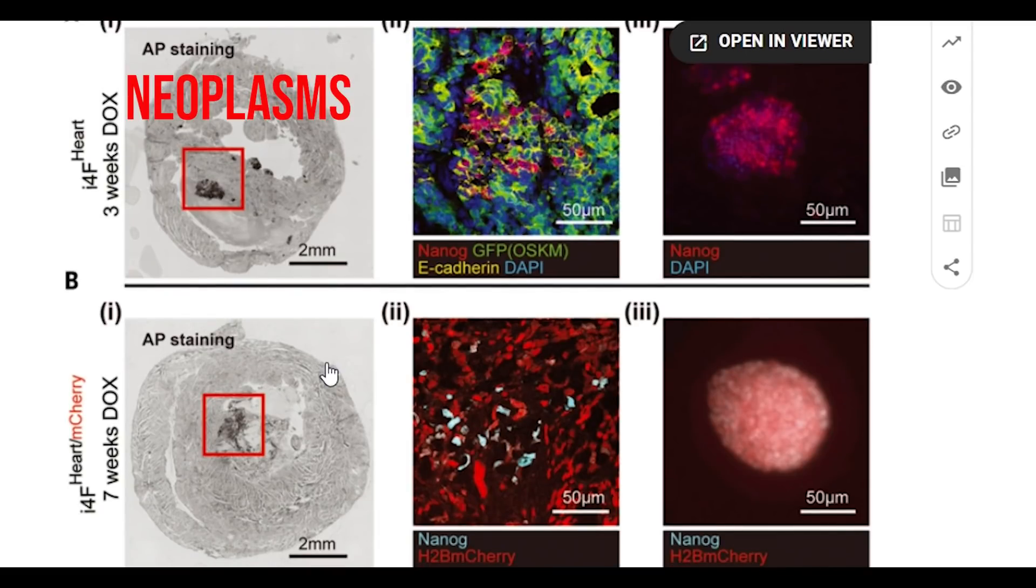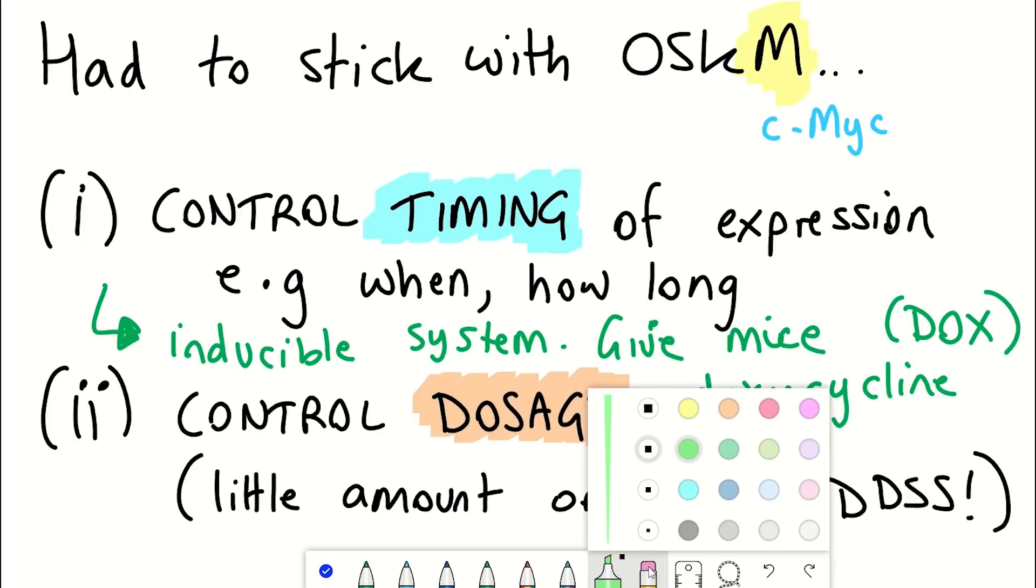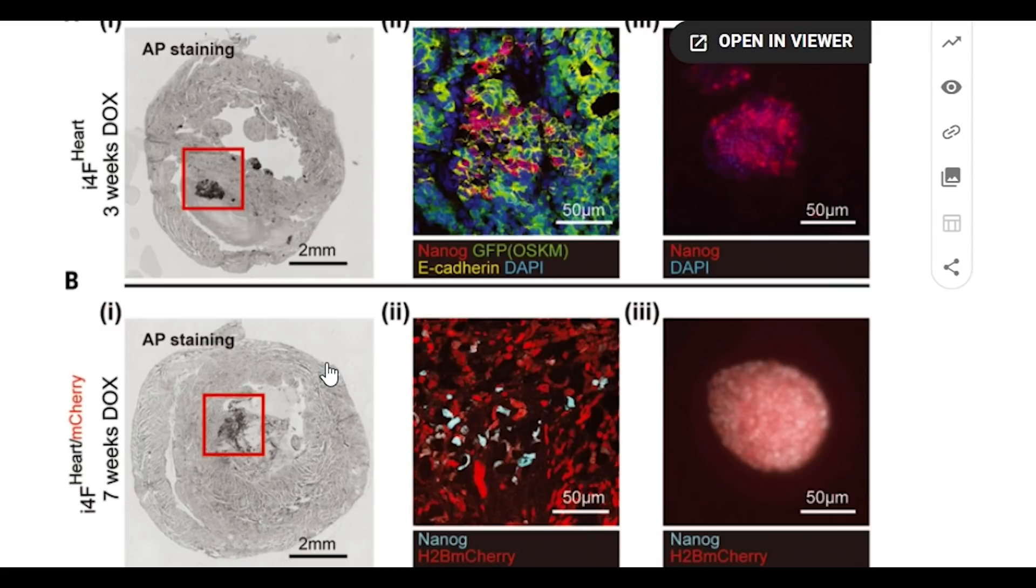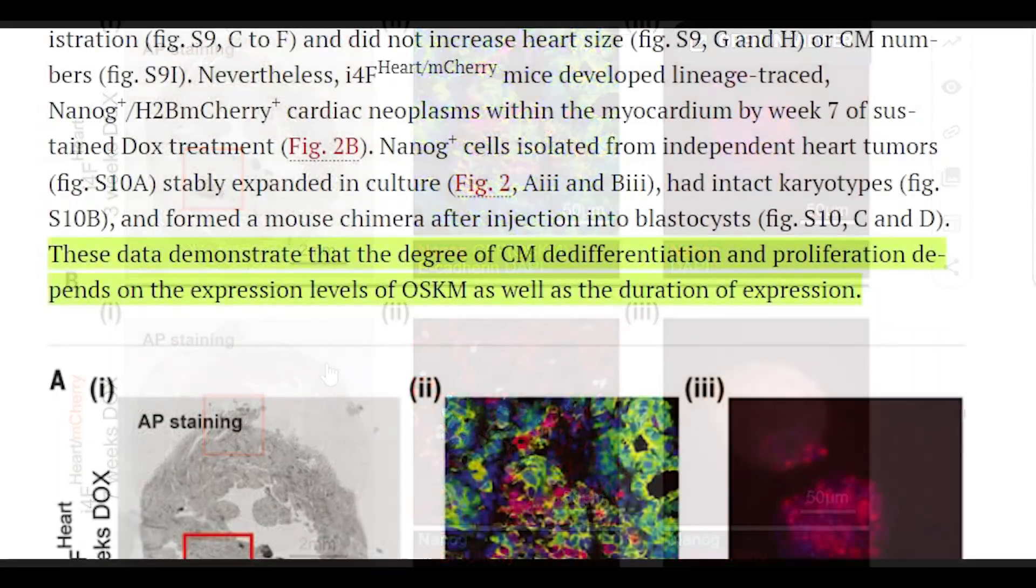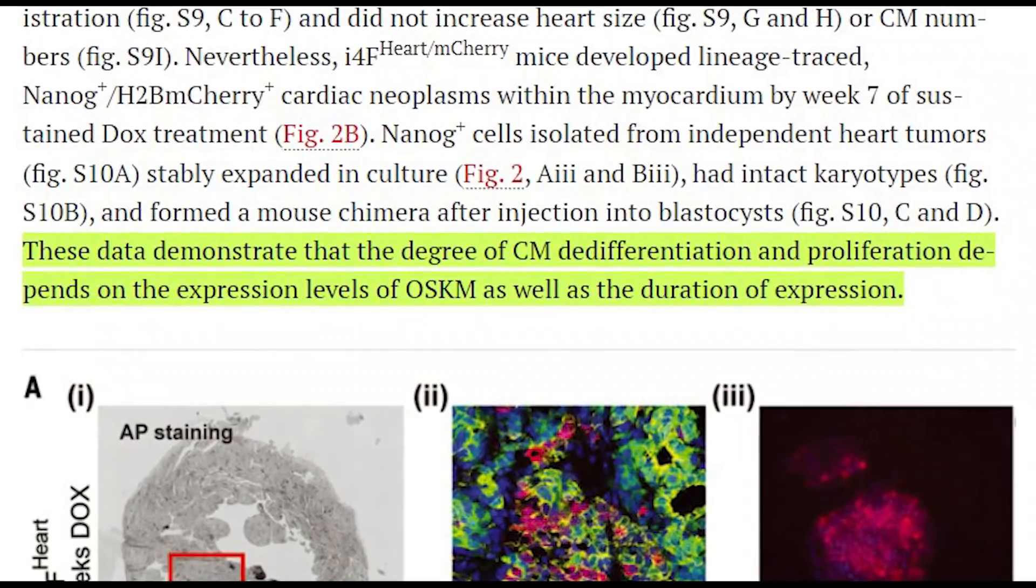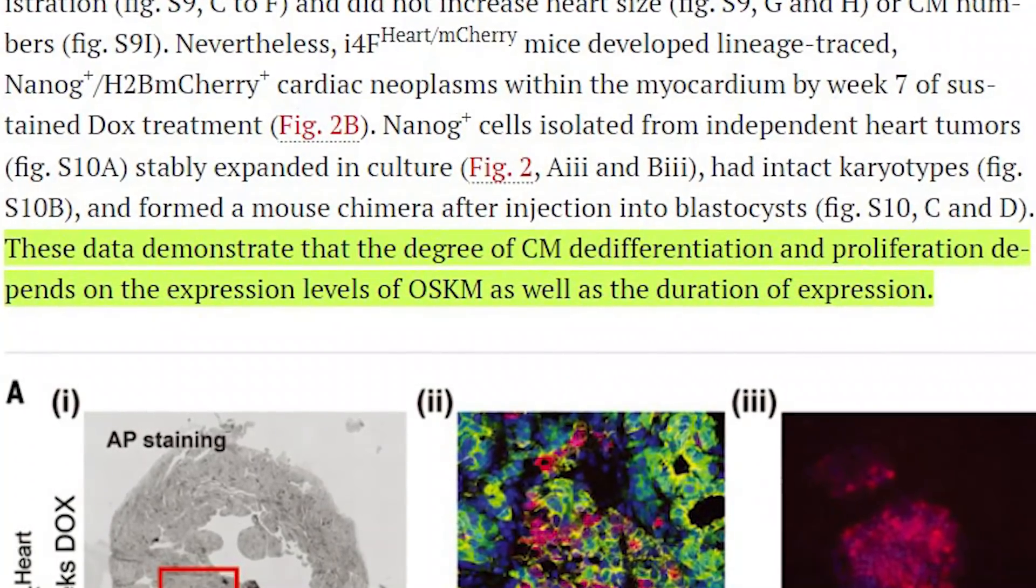They also tested prolonged expression, but with a lower amount being expressed - so with a weaker continuous expression. However, they still saw neoplasms by seven weeks. So the data so far suggested that the degree of cardiomyocyte de-differentiation and proliferation depended on when the expression occurred and how much expression there was.